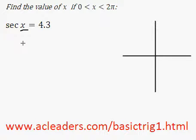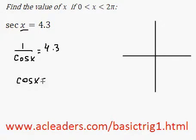And just to get started, we know that secant of x is equal to 1 over cosine of x, which is equal to 4.3. And I can cross multiply to find out that cosine of x is equal to 1 over 4.3.